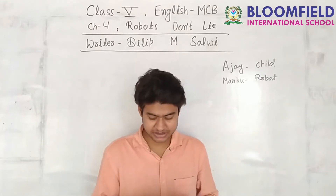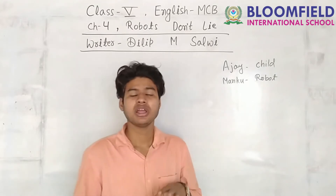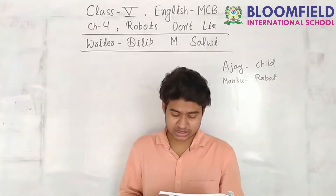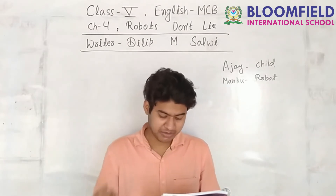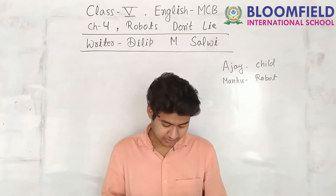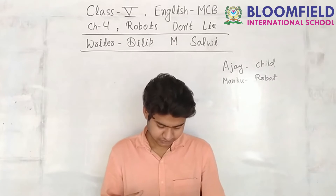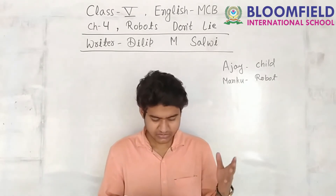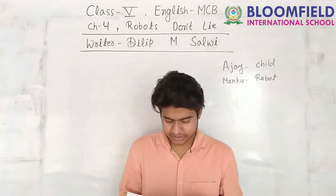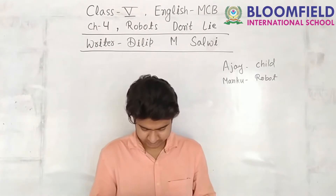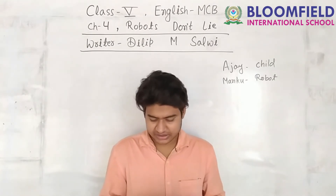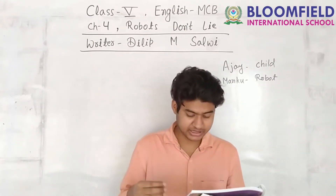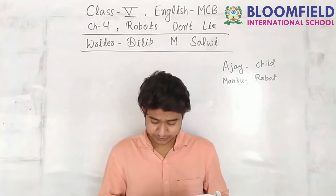Ajay was exasperated — highlighted in blue as a difficult word — meaning very irritated and annoyed. Manku replies: 'Correction — robots are supposed to participate in household activities. They babysit' — meaning look after a baby for a short while when parents are away. Ajay's father told them both to stop quarreling and told Ajay to do his homework. Ajay sat at the computer, knowing he was in trouble and blaming Manku.